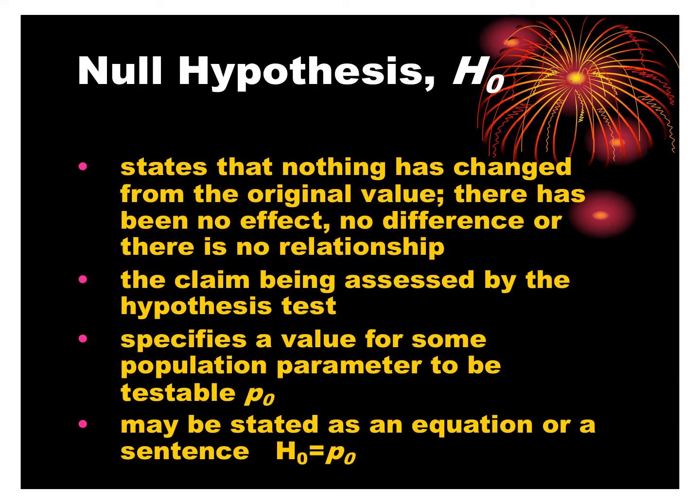Our one-proportion hypothesis tests are called z-tests because we're going to use the normal model, just like we did with our one-prop-z interval. We start with the null hypothesis.